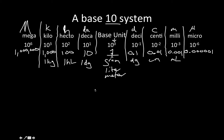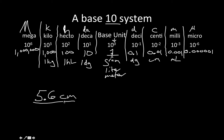Now let's go over a couple of conversion questions. Let's say we have 5.6 centimeters and I ask how many hectometers are in 5.6 centimeters. The first thing we do is write down what we know — our given information: 5.6 centimeters — and identify where we want to get to: hectometers.